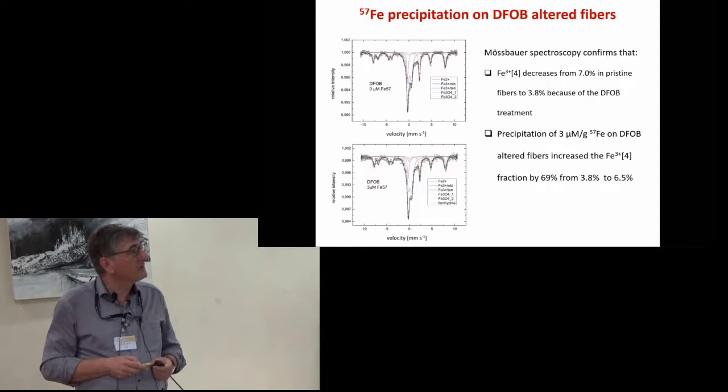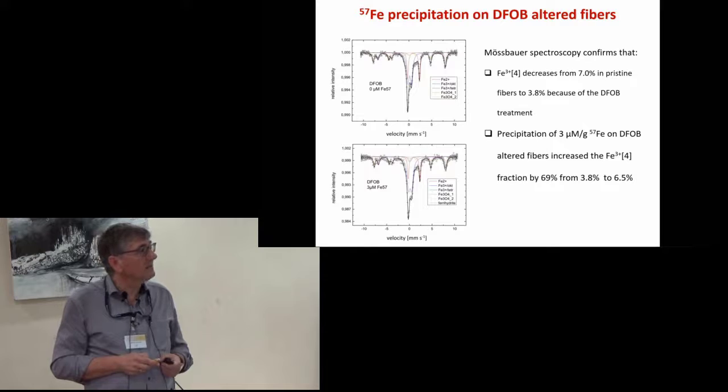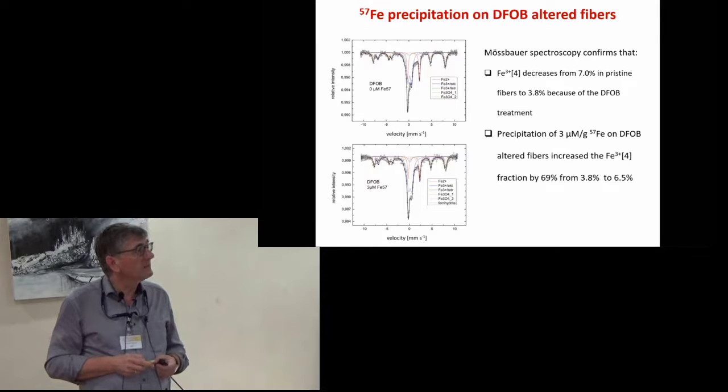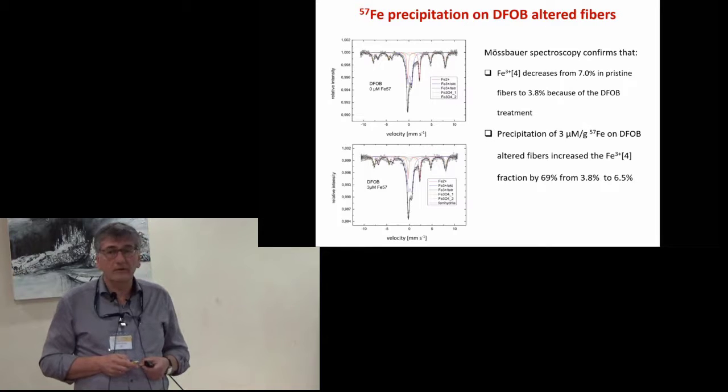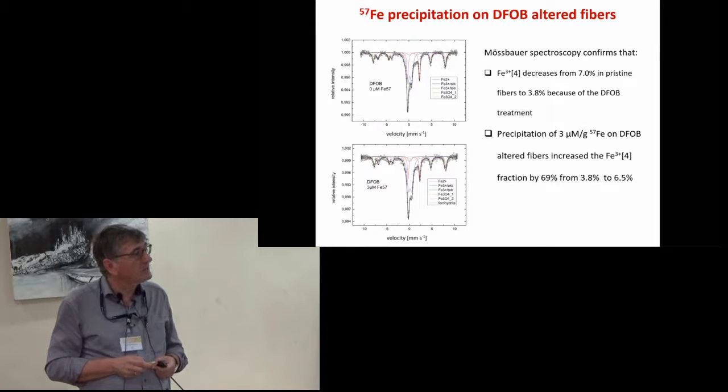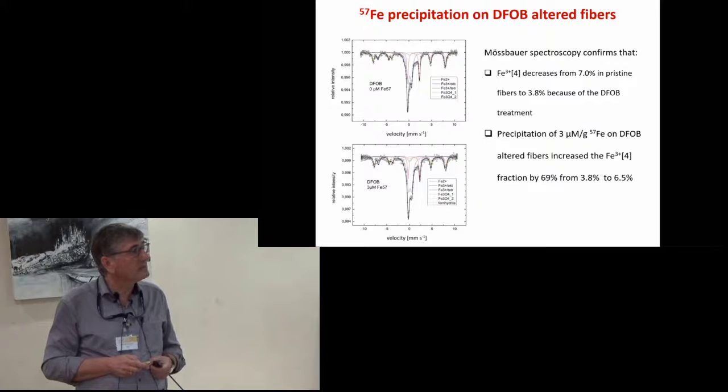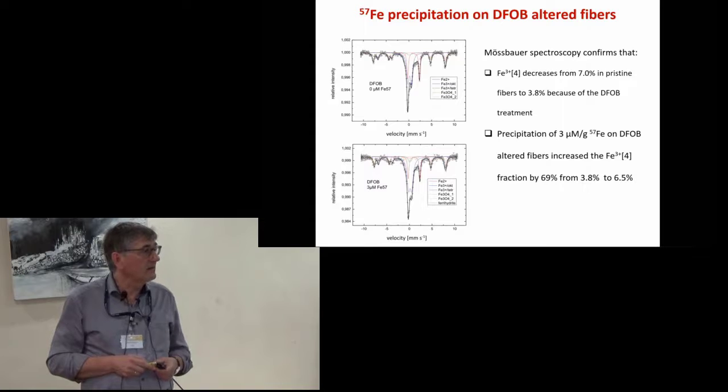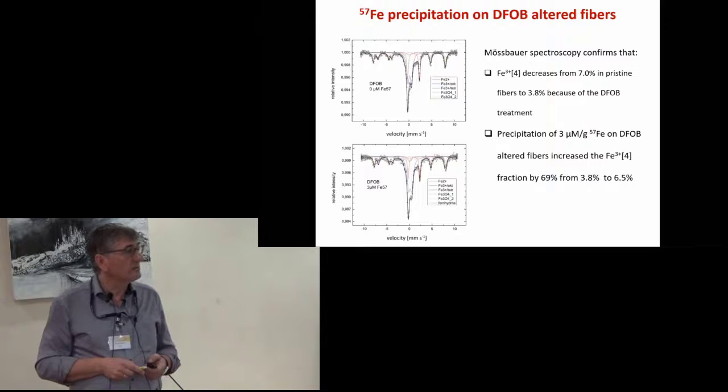This is confirmed by the Mössbauer spectra measurements. The tetrahedrally coordinated ferric iron atoms of the DFOB altered fibers decrease from 7% in pristine fibers to only 3.8% because of iron depletion by DFOB treatment. The precipitation of three micromole per gram extra iron on DFOB altered fibers increases this tetrahedrally coordinated ferric iron fraction clearly by approximately 70%, from 3.8 to 6.5%.